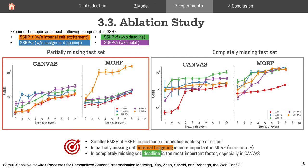In our ablation study, we examine the importance of modeling each type of stimuli by removing the corresponding parameterization. The full model (shown in red) usually enjoys lower RMSE across all settings, confirming the importance of each stimuli type. Notably, in the partially missing set, internal triggering effect is more important in Morph, while in the completely missing set, deadline is a very important factor, especially in Canvas.